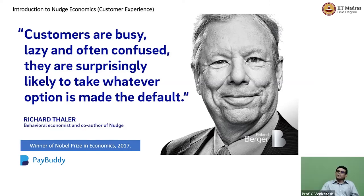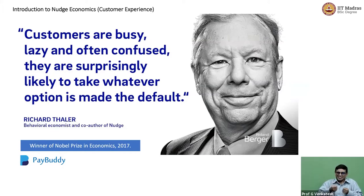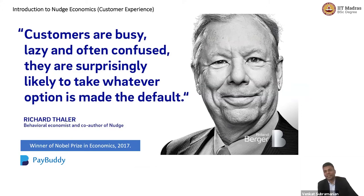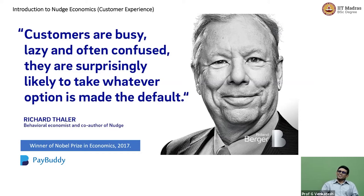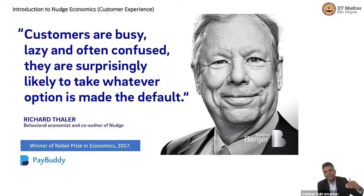In retail stores there's also this business of nudging — they keep desirable things near the checkout counter, like chocolates, so when you're standing there you're automatically nudged to reach out and grab one. In e-commerce they do something similar: when you're checking out they show you a few more things you might want. There was another example where a supermarket in the US wanted to promote healthy food, so they put green arrows along the walking path leading towards fresh fruits and vegetables — and people who were normally unlikely to buy those items unconsciously followed the arrows and bought them.